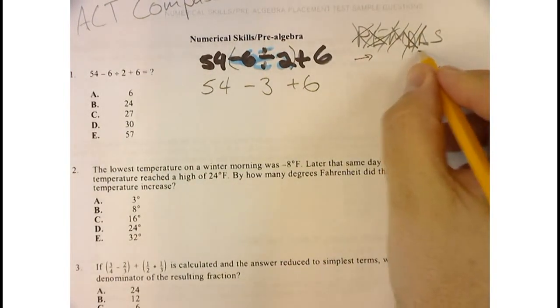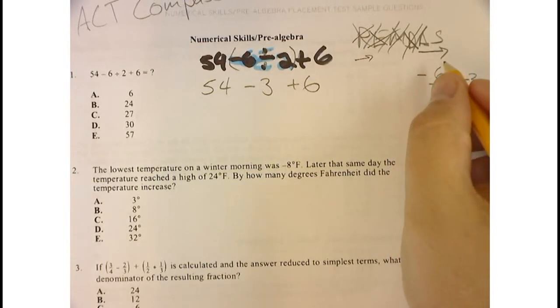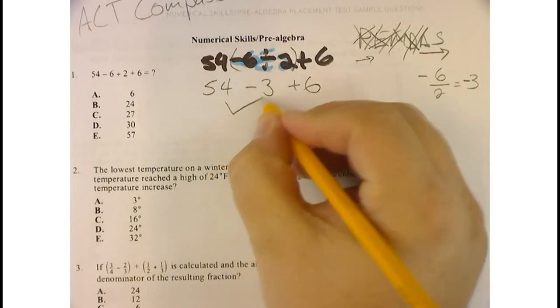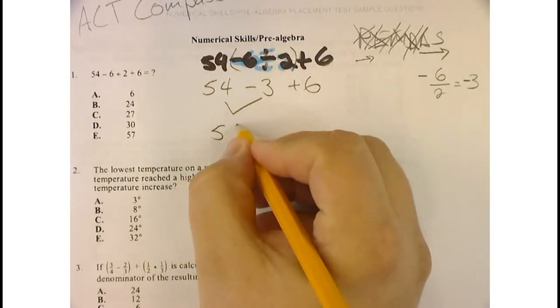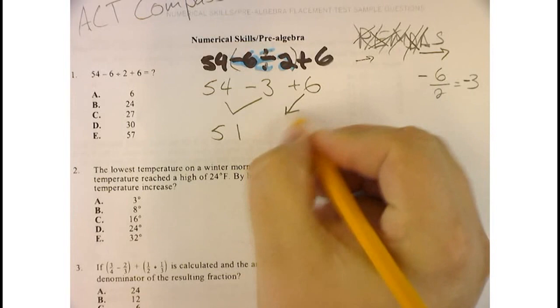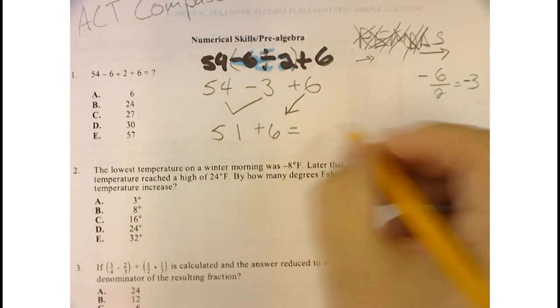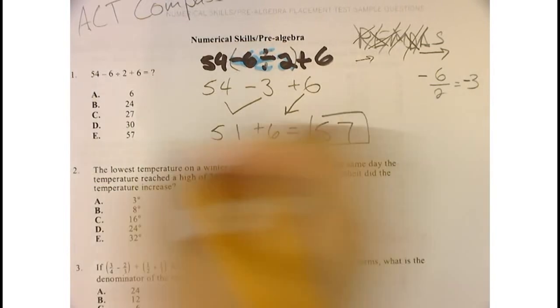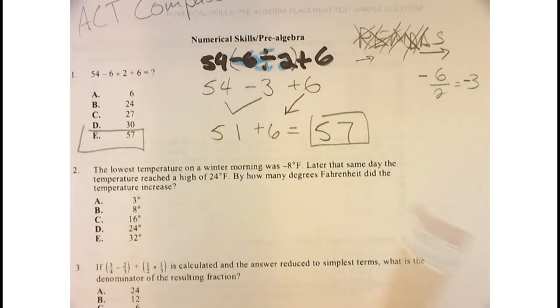So adding and subtracting, like multiplying and division, is going to be done from left to right. So I would do this first, and I would say 54 minus 3 is 51, carry down the plus 6. And when I add the 51 plus 6, it equals 57. And that is the answer 57.